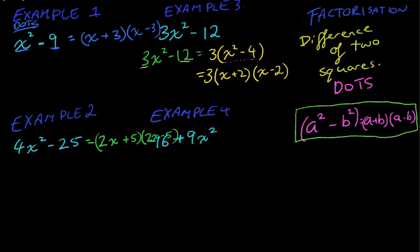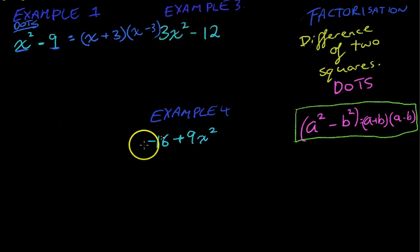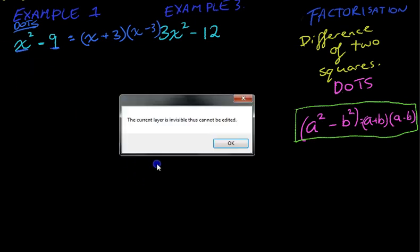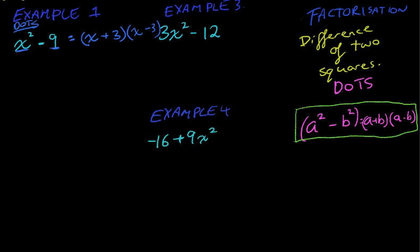Let's see if we've got any more examples we can do. I just need to get rid of some stuff so we can see what's going on. This one is another example. Now, it's a bit tricky. It doesn't look like a difference of two squares right away. But watch what happens when I rewrite it. We've got a positive 9X squared. And then we've got a negative 16.